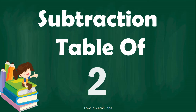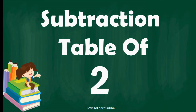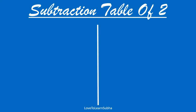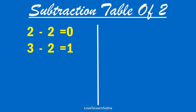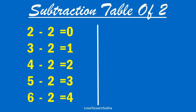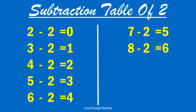Subtraction table of 2. 2 minus 2 equals 0. 3 minus 2 equals 1. 4 minus 2 equals 2. 5 minus 2 equals 3. 6 minus 2 equals 4. 7 minus 2 equals 5. 8 minus 2 equals 6.